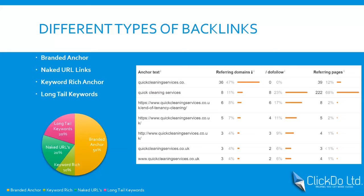The fourth type is long-tail keywords. If you are planning to rank for 'cleaning company London,' you can add relevant words to it and link back to the target page — for example, 'cleaning services company in London.' You have the core words but also include other relevant terms at the same time. Those are the four main types of anchors we use when building backlinks.